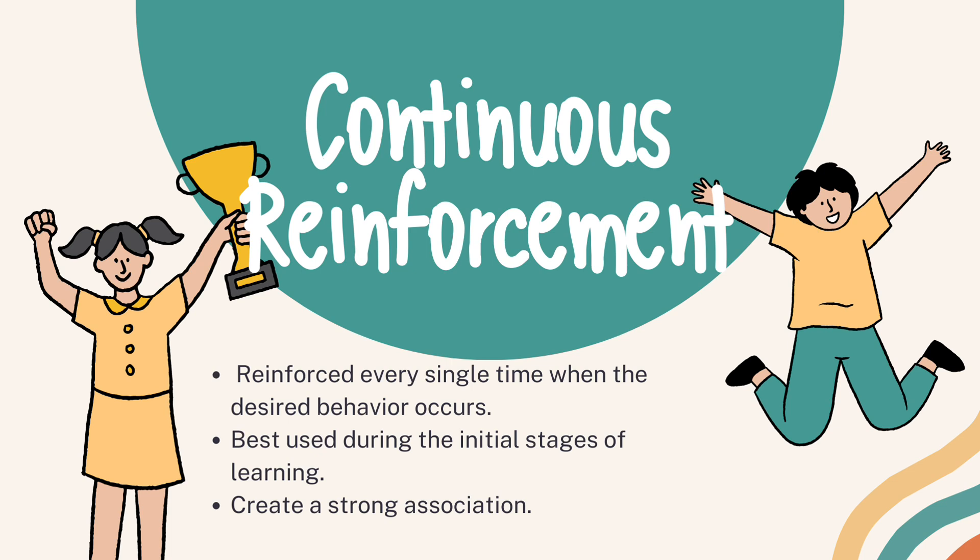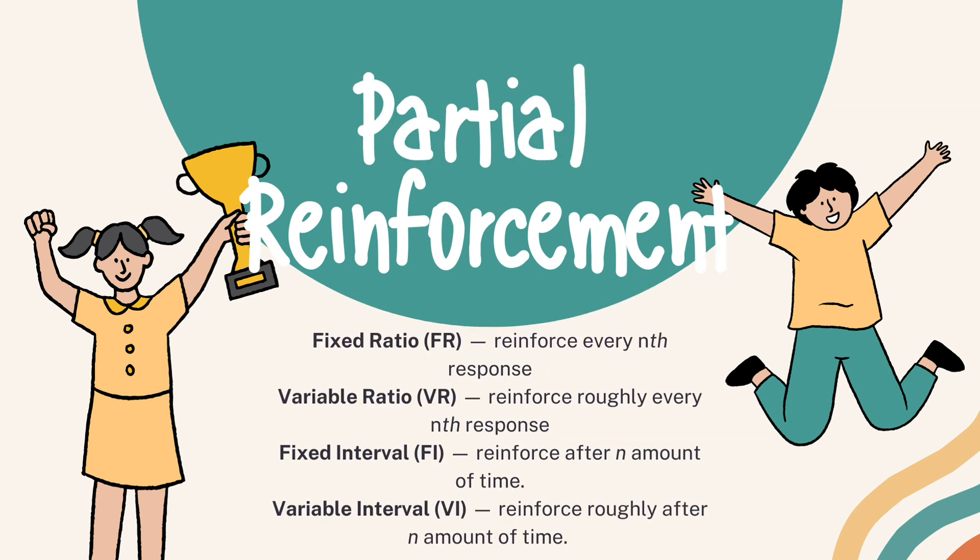The fixed ratio schedule reinforces the behavior after a fixed number of occurrences. For example, a rat might receive a food pellet every five times it presses a lever. The variable ratio schedule reinforces the behavior after a variable number of occurrences. For example, a slot machine might provide a payout after an unpredictable number of pulls.